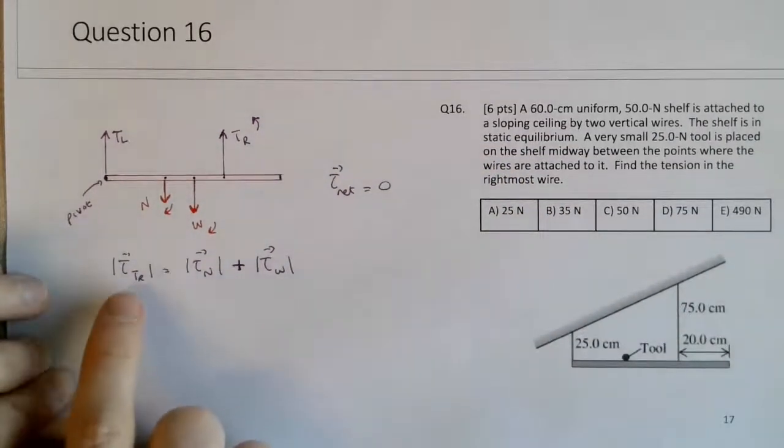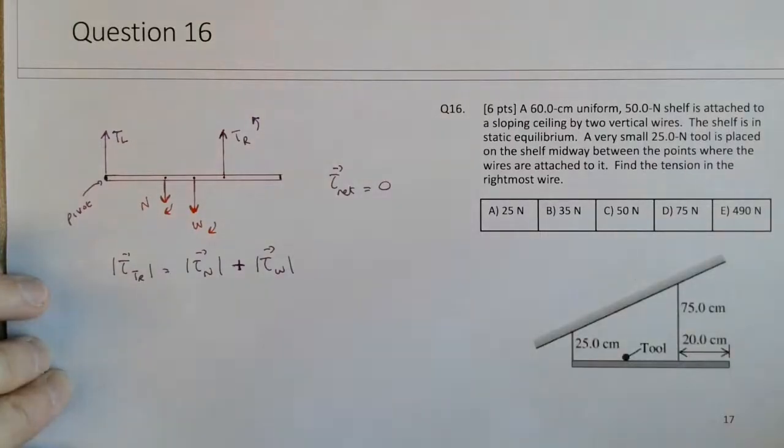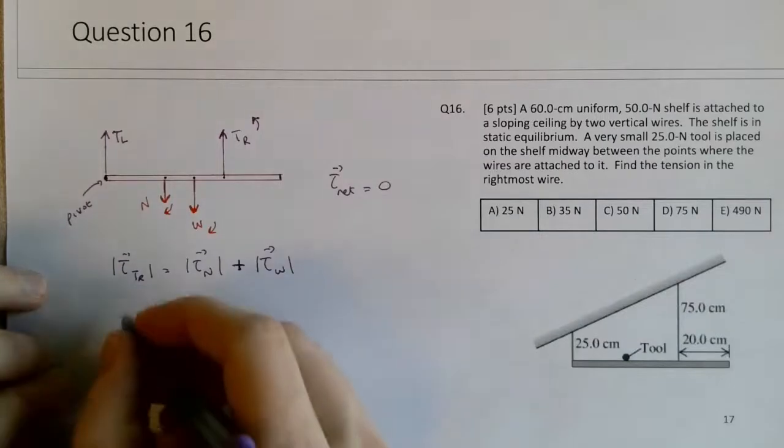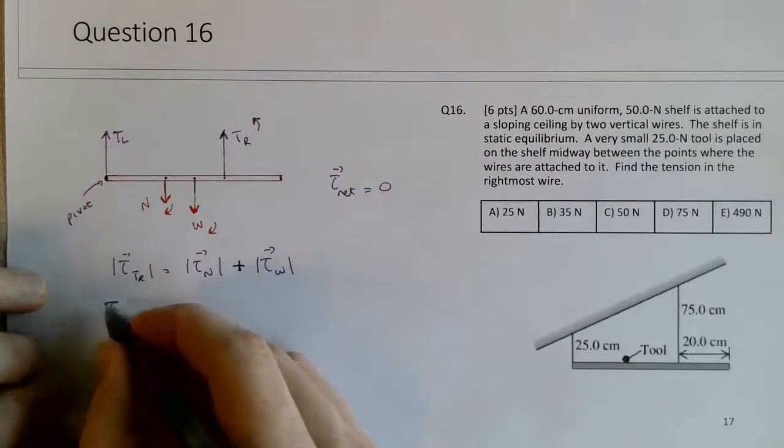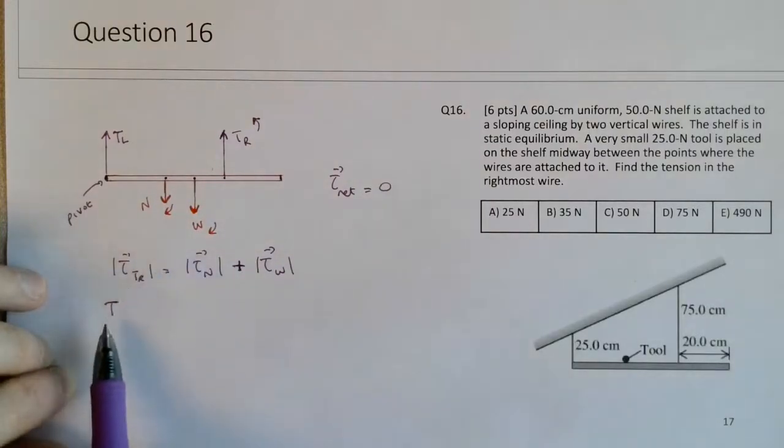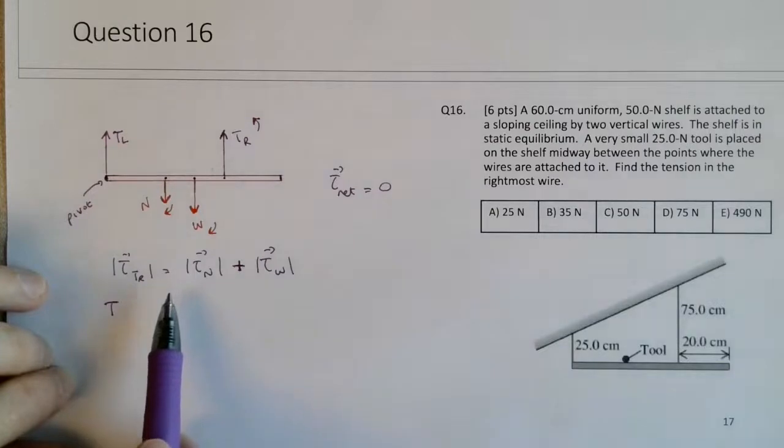So what is the size of this torque due to the tension? So this would be equal to the tension times its distance. So you can keep the distances either in centimeters or in meters because there's going to be a division at the end. But if you want to do it technically correct, if you have correct units, we would be using meters.